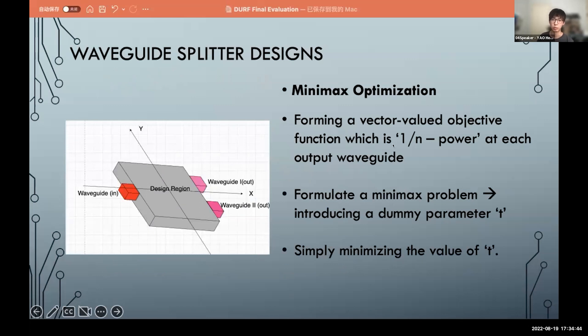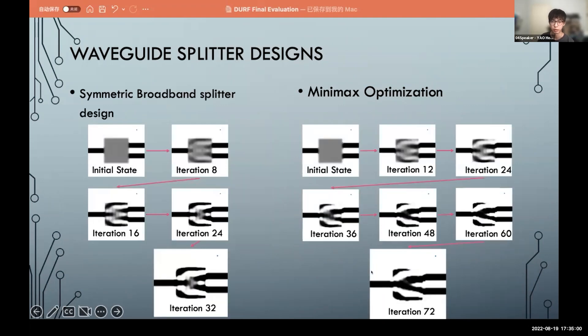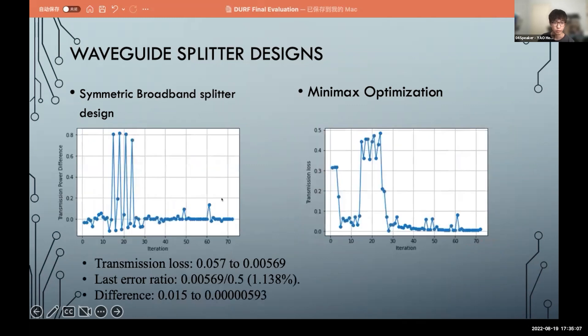And here is the coding part. We just set our objective function as one over m minus the output power. This is the power loss. And we introduce the dummy parameter, and what we will do is simply minimizing the value of t. And here is the final result. So you can see that the design field, the waveguide is not symmetric, but we can see the result. The loss error ratio is just one percent, and the difference of the two output waveguides is very small, it means that the two waveguide outputs are identical.